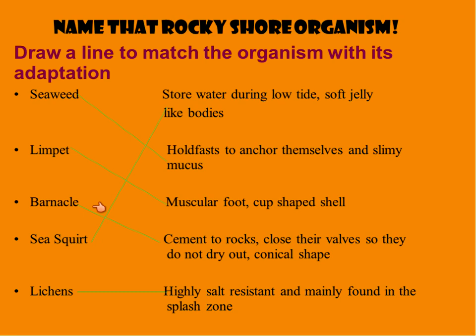Barnacles use a cement to attach themselves to rocks, close up to conserve moisture, and have a conical shape — very sharp at the top. Sea squirts have a soft jelly-like body and are able to store water so they don't dry out. Lichens look like algae growing on rock, are totally salt resistant, and are found in the splash zone.